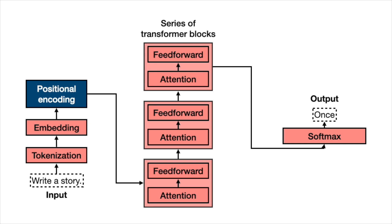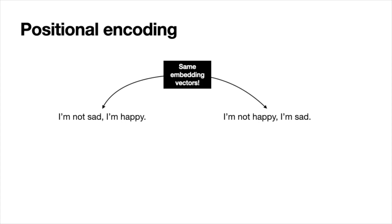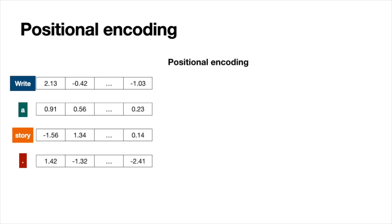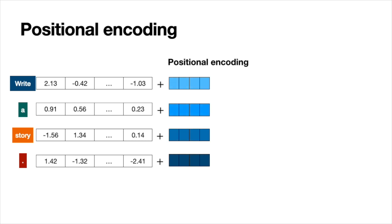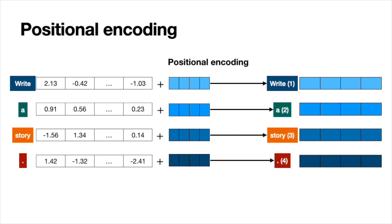The next step is called positional encoding. What positional encoding does is give order to the words in a sentence. For example, 'I'm not sad, I'm happy' and 'I'm not happy, I'm sad' mean something completely different — they're opposites. However, when you turn every word into a vector, you get the same numbers because the vectors are the exact same thing. Positional encoding breaks that by simply adding a different vector to each word: one to the first, to the second, to the third, to the fourth. These entries can be sine of something or e to the something — something sequential. When you add these, the words become different, so you get different embeddings for sentences if you change the order of the words.